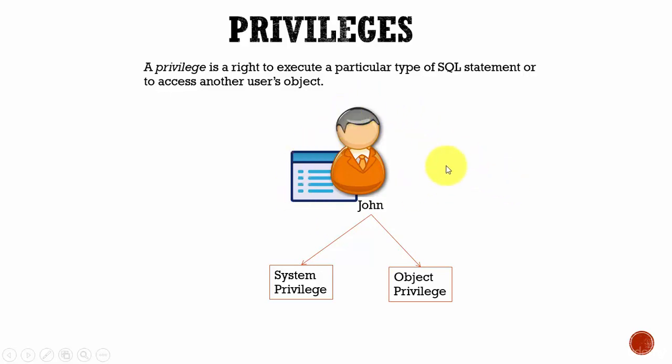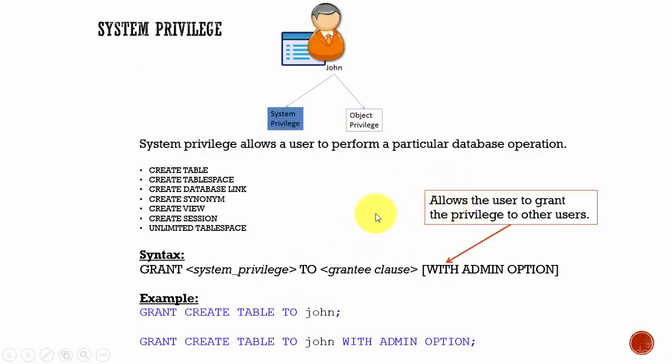Every user will have two types of privileges: system privilege and object privilege. System privilege allows the user to perform certain types of database operations, like creating a table, creating a tablespace, creating a view, or creating a session. The system privileges define what database operations the user is allowed to perform.